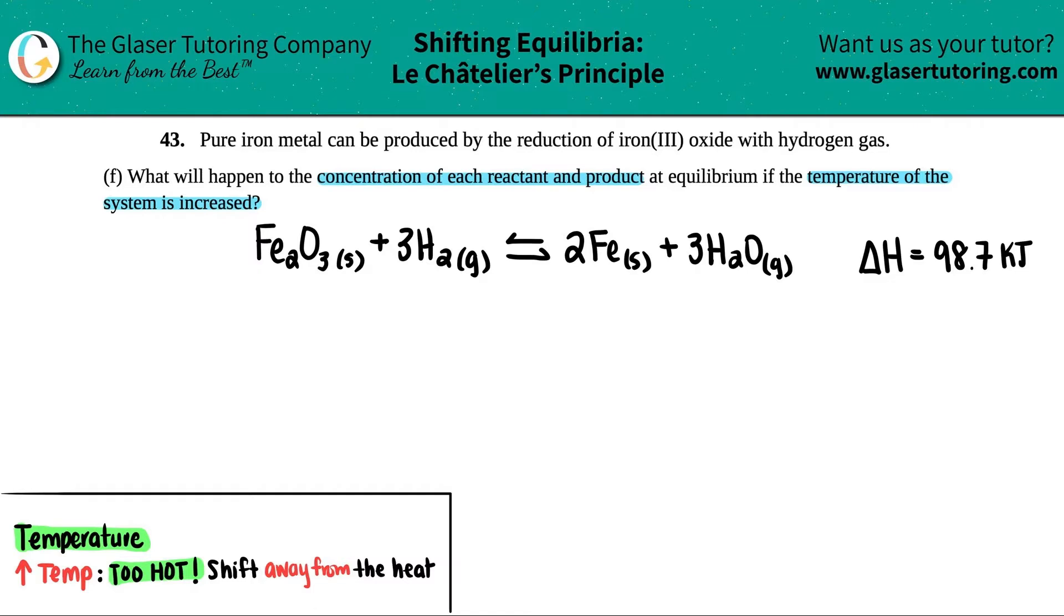Okay, we have something at equilibrium, all of a sudden we shock the system, we're increasing the temperature in this case, so we got to bring it back to equilibrium. These are Le Chatelier's principles. How do we bring it back to equilibrium when the temp has increased?